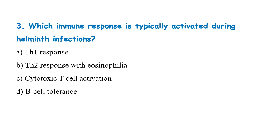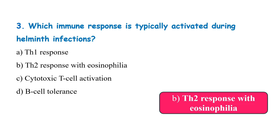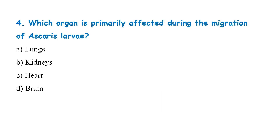Which immune response is typically activated during helminth infections? Th1 response, Th2 response with eosinophilia, cytotoxic T cell activation, or B cell tolerance? The correct answer is Th2 response with eosinophilia. Which organ is primarily affected during the migration of Ascaris larvae? Lungs, kidney, heart, or brain? The correct answer is lungs.